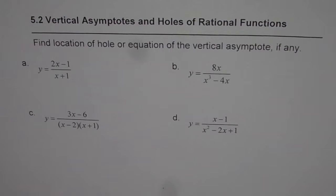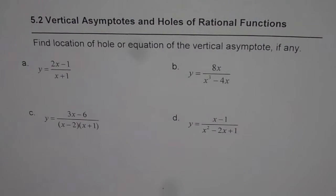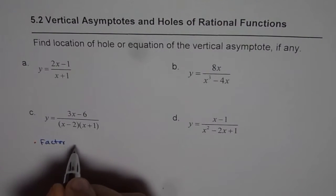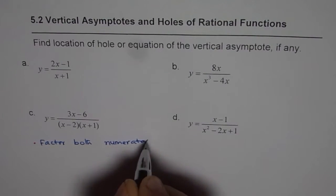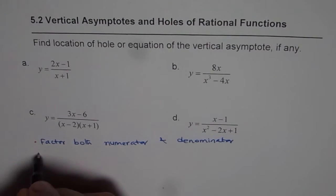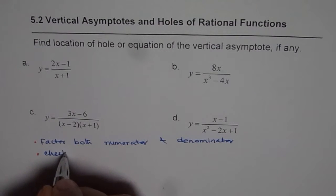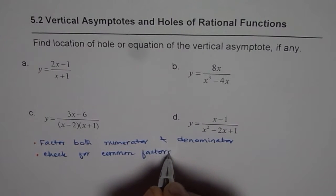Whenever you are looking for the location of holes or the equation of a vertical asymptote, you need to factor both the numerator and denominator — that should be the first step. The second step is to check for common factors. So these are the two steps to be followed.